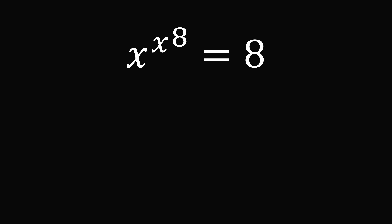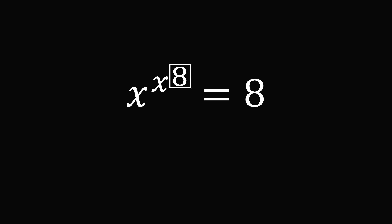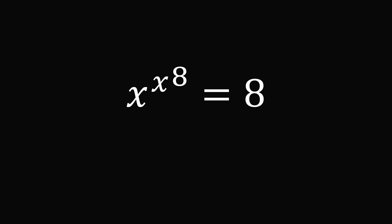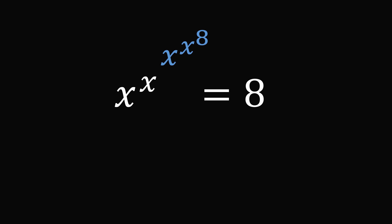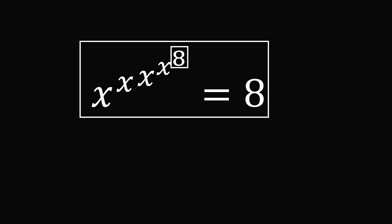Now that we know this has a real solution, let's have a little fun. We have 8 as an exponent, and looking at the entire equation, 8 equals x to the power of x to the power of 8. So what if we substituted x to the power of x to the power of 8 for that 8? We end up with x to the power of x to the power of x to the power of 8, which still equals 8. But why stop here? We again have 8 in the exponent, and we know 8 equals the entire left side.